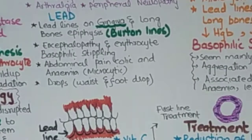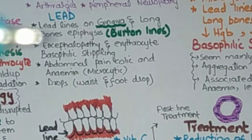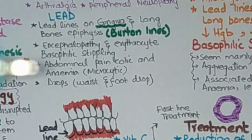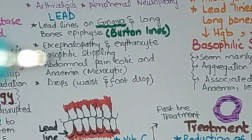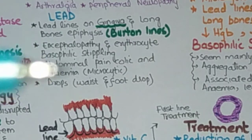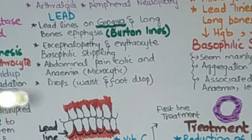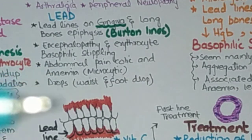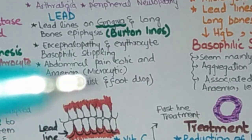Another specific mnemonic is LEAD: L for lead lines on the gingiva and the long bone epiphysis — Burton's line; E for encephalopathy and erythrocytes basophilic stippling, aggregation of the residual ribosomes; A for abdominal pain, colic, and anemia; D for drops — microcytic anemia and wrist and foot drops.